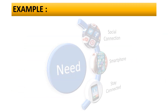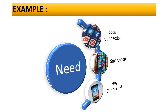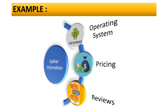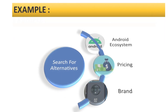Consider a customer who recognizes the need for a smartphone to get socially connected with family and friends — that is the need recognition stage. The next step is gathering information: the consumer collects all information about the smartphone, such as product specifications, operating system, and price, reviewing through various sources. Let us say that after gathering all the information, the consumer decides to purchase an Android mobile.